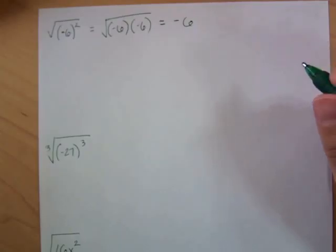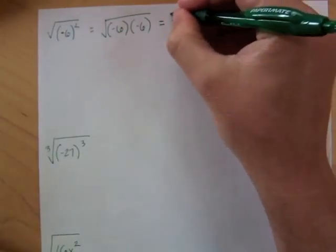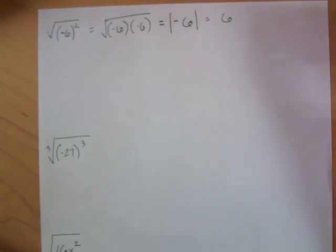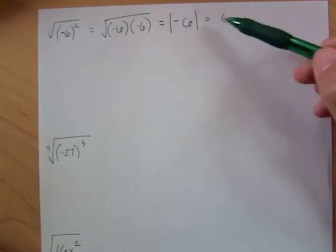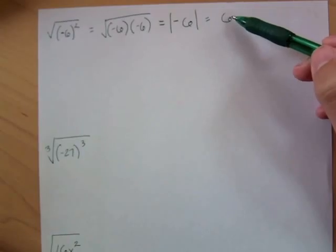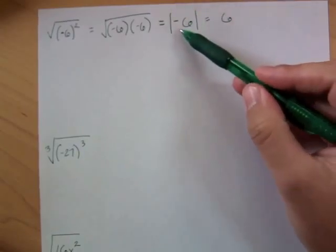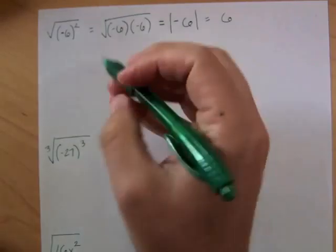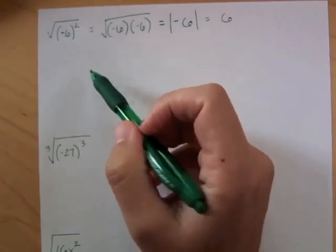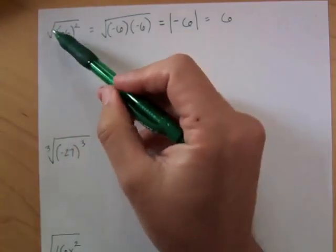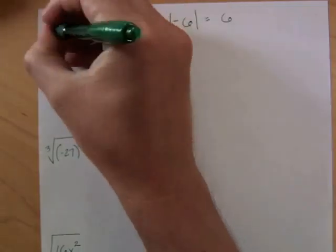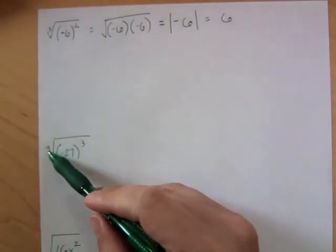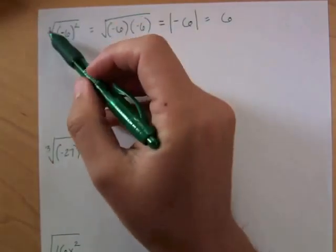But the answer is not actually negative 6. The answer is the absolute value of negative 6, which is positive 6. Why is the answer positive 6? The reason is our index in this problem — the index is the number of the root. This is a square root, so the index is 2. The next problem has an index of 3.